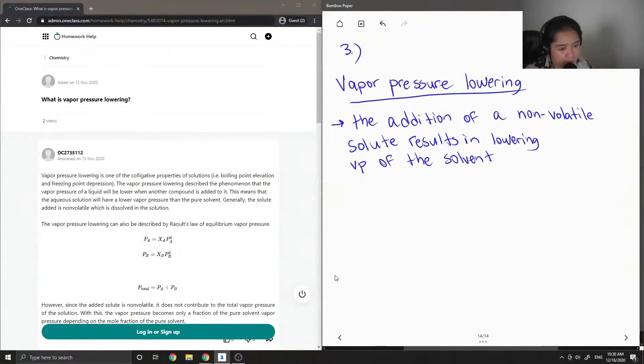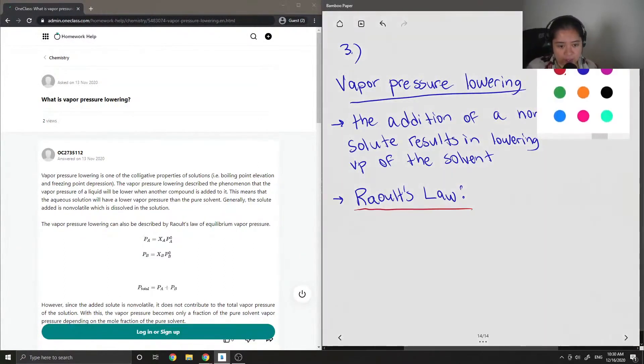We can also use Raoult's Law to try and describe how the values of the vapor pressure may change upon the addition of a non-volatile solute.